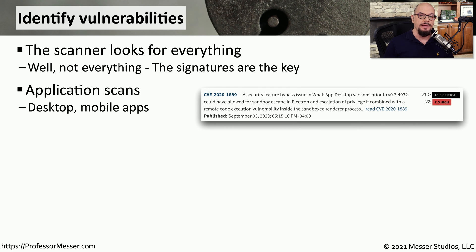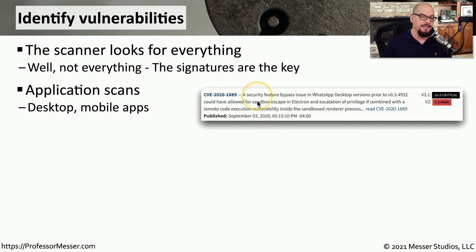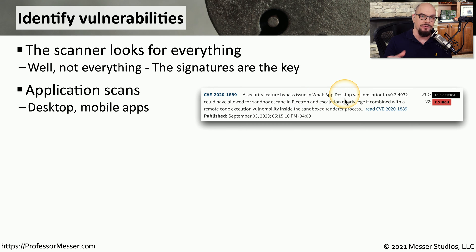You will certainly find vulnerabilities associated with particular applications like desktop apps or mobile apps. Here's a desktop app vulnerability, CVE-2020-1889, which has a security feature bypass issue in WhatsApp desktop. You'll need to update the application to be able to resolve that security vulnerability.